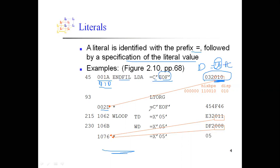There are two ways to define constants using literal pools. One is through the LTORG directive — whenever you see LTORG, the next definition that follows is a literal pool. Here we have a literal =C'EOF' defined via LTORG. Alternatively, you can place all literals at the end of the assembly code. For example, TD has one literal and WT =X'05' is another literal.